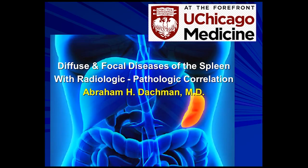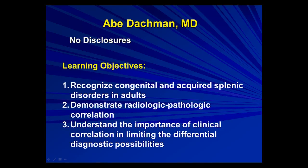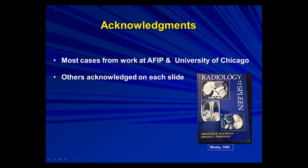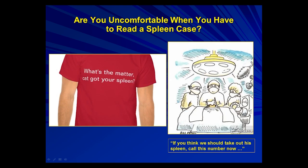This is Abe Dachman. I'll be speaking about diffuse and focal diseases of the spleen. We're going to emphasize RadPath correlation and the importance of clinical correlation to limit the differential diagnostic possibilities of entities seen in the spleen. Most of the cases are taken from the AFIP or University of Chicago, and some others acknowledged on the slide. Most people feel a little bit uncomfortable with diagnoses in the spleen, and that's why I thought this lecture was worthwhile.